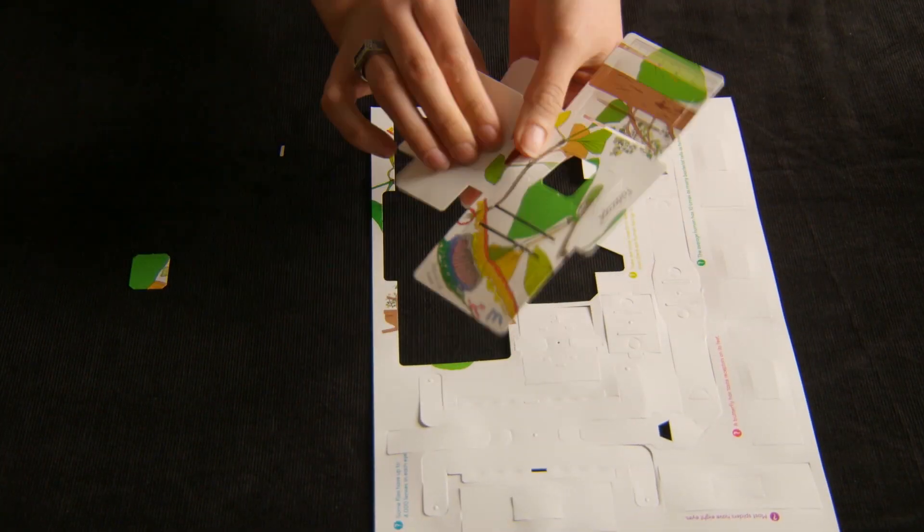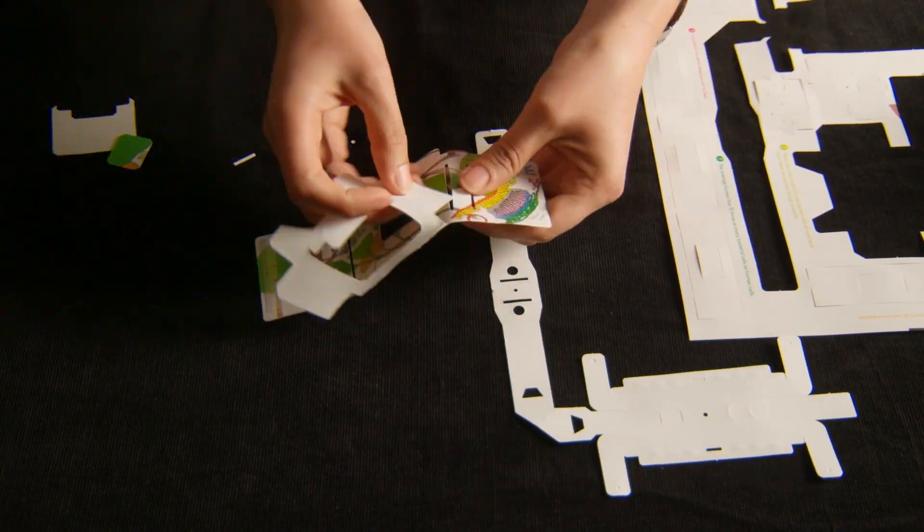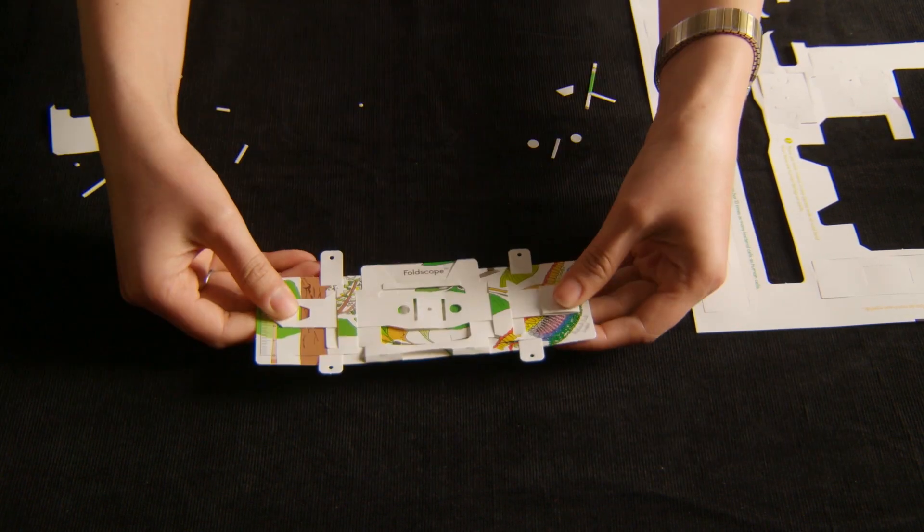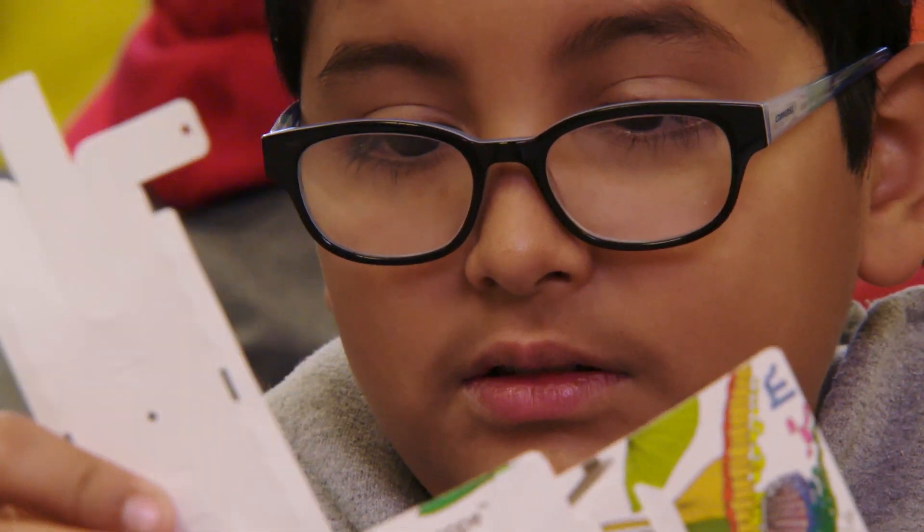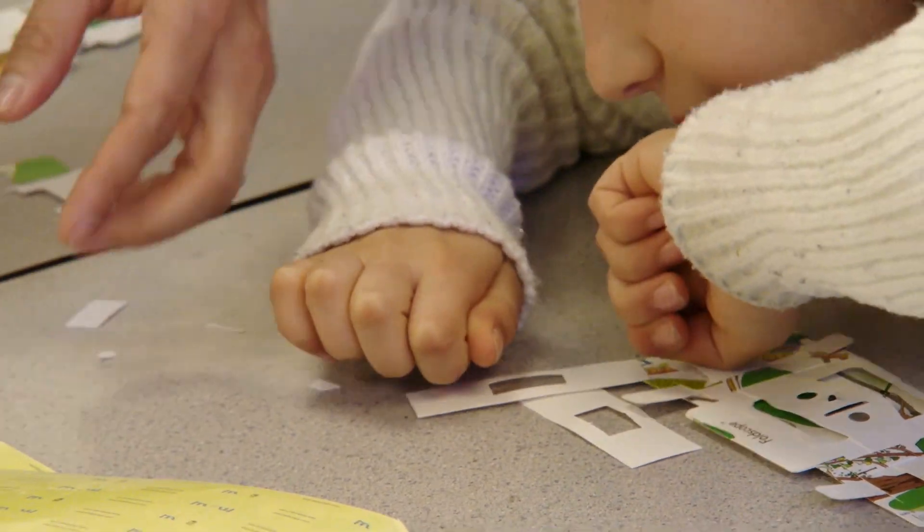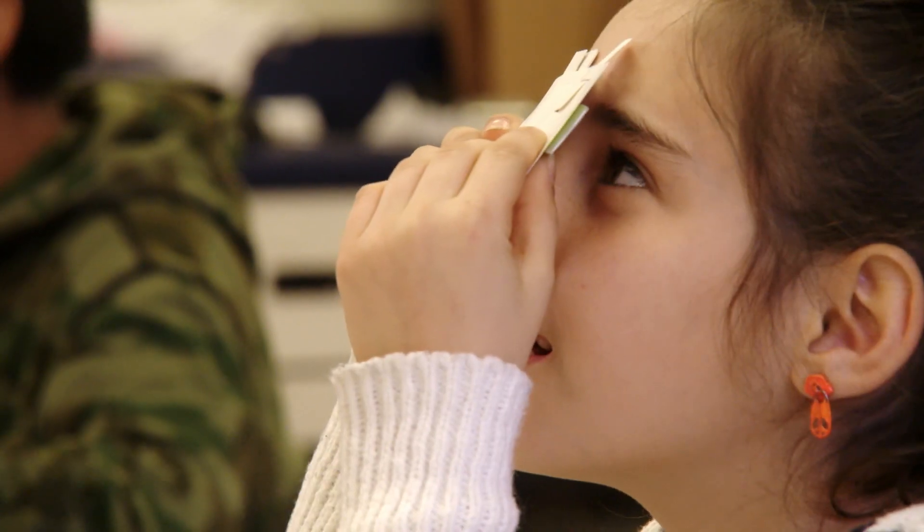And that led to what we call Foldscope, which is an origami microscope that you put together. We've shipped 50,000 of them, there are kids around the world using them. Next year we're going to be making a million of them.